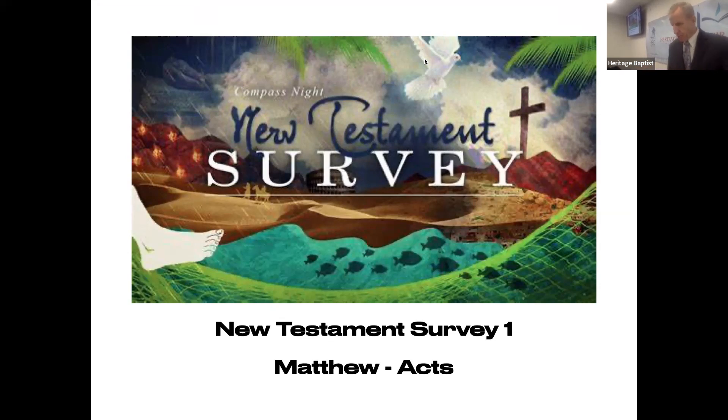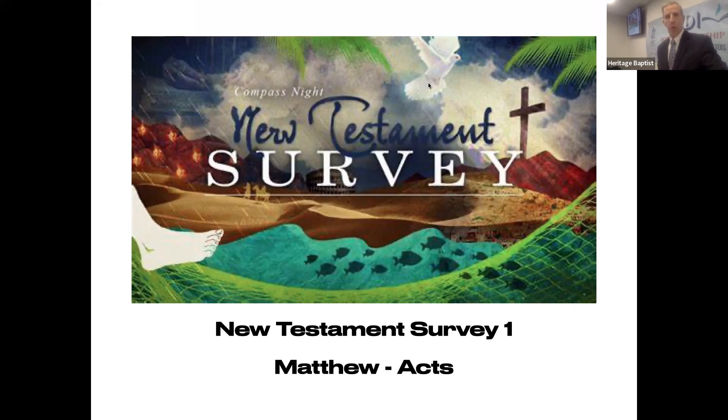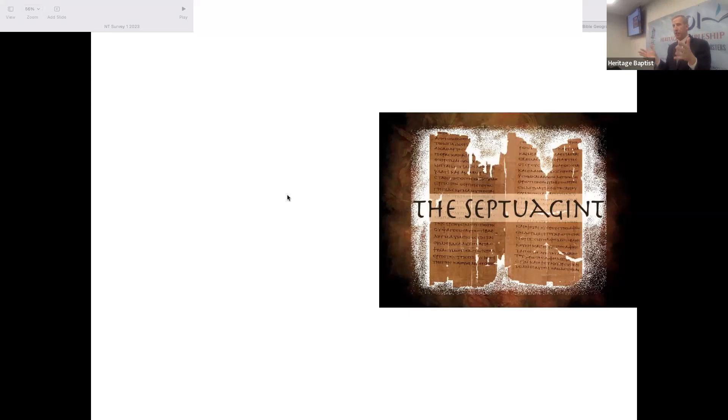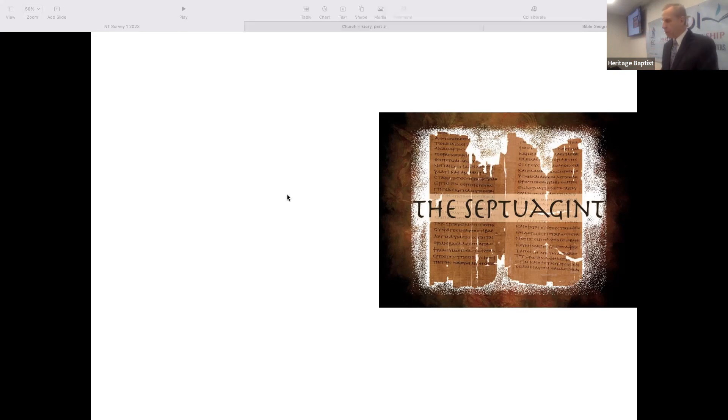In your notes on page three, we'll look at introductory material. The first thing is the intertestamental period — the period of time between when Malachi was completed and when Matthew began to be written, which is 400 years. What can happen in 400 years? A lot. Four hundred years is longer than the United States has been in existence as a nation. So what happened in those 400 years that's significant for understanding the New Testament?